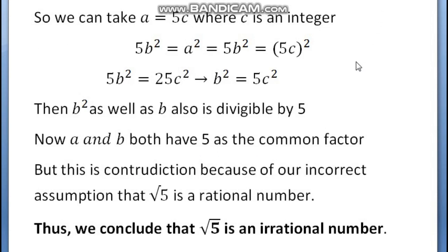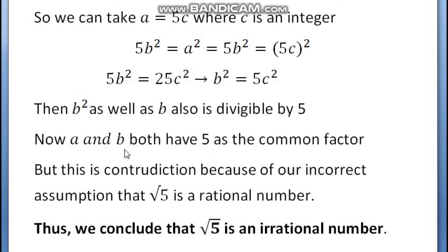And therefore, we can tell that A and B both have 5 as the common factor. But this is a contradiction because of our incorrect assumption that Root 5 is a rational number. Thus, we conclude that Root 5 is an irrational number.